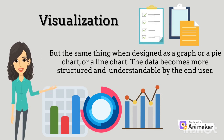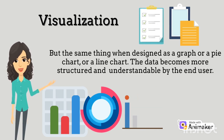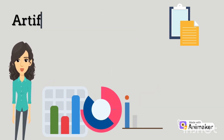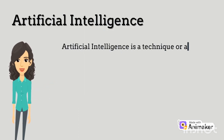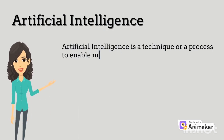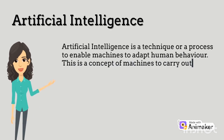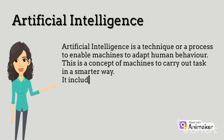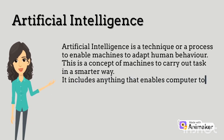more understandable by the end user. This helps in understanding any kind of data patterns, but visualization is not a part of any model. Artificial intelligence is a technique or process to enable machines to adapt human behavior. It includes anything which enables the computer